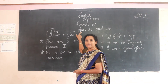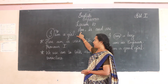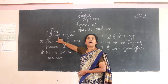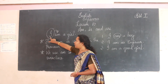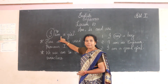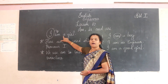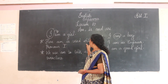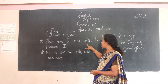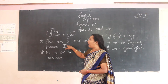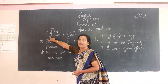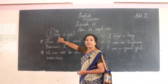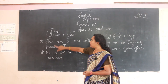See here — how to write 'am'. 'I' is a pronoun, and after the pronoun 'I' we write 'am'. 'Am' is used with the pronoun 'I', and when we talk about ourselves we use 'am'.